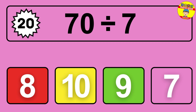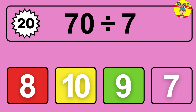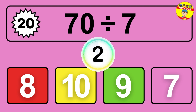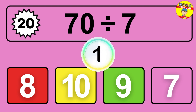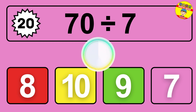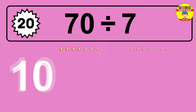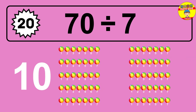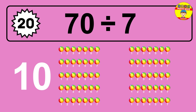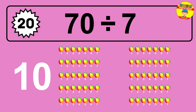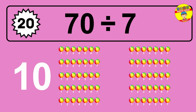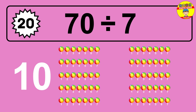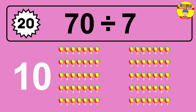What is 70 divided by 7? Picture this: you have 70 objects to divide into groups of 7. How many groups can you make? Let's think about it. Ready to find out? Let's break it down. Let's imagine you have 70 objects. Can you picture them lined up?